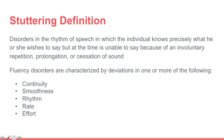Remember that involuntary part for the next slide. Fluency disorders are characterized by a deviation in one or more of the following areas: continuity, which relates to the smoothness of speech and how often speech is affected by disfluency; smoothness, which relates to words and sounds being connected in a natural, uninterrupted way; rhythm, which is the rhythmic pattern of speech depending on intonation, stress pattern, timing, and duration; rate, which is how fast or slow speech is, measured by words or syllables per minute; and effort, which is how much mental or physical work it takes to talk — normal speech is not effortful.